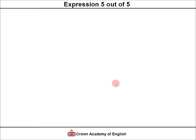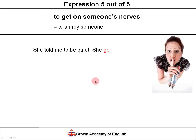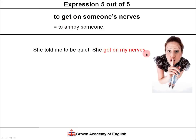And finally, expression five — a very, very common expression in English: to get on someone's nerves. This is an excellent expression and you will hear it all the time. Again, this means to annoy someone — this is probably the most common version. Example: she told me to be quiet. She got on my nerves. 'Got' is the past simple form of 'get,' so this is the past form — she got on my nerves, she annoyed me.